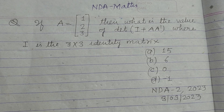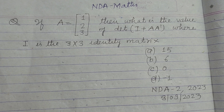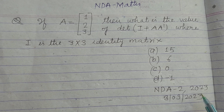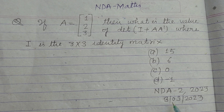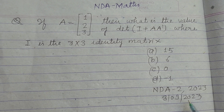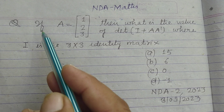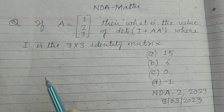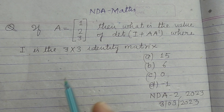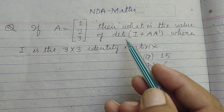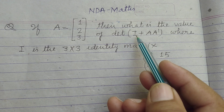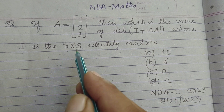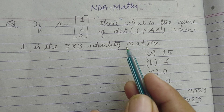Hello student, welcome to this YouTube channel. This is a question from NDA 2nd 2023, held on 3 September 2023. If A equals a 3×1 column matrix [1, 2, 3], then what is the value of the determinant of I plus AA', where I is a 3 by 3 identity matrix.